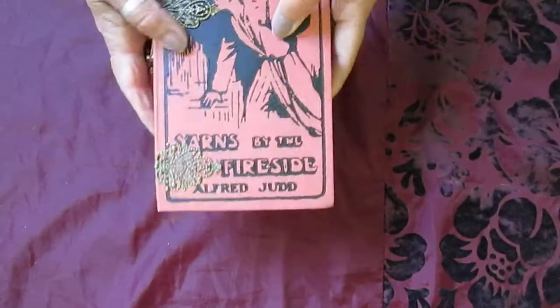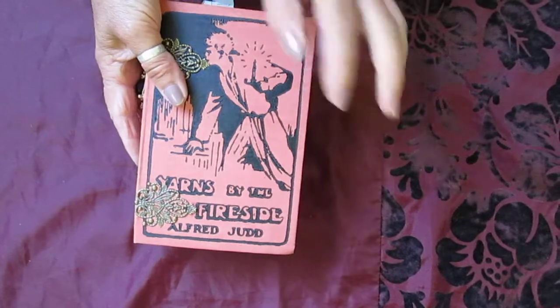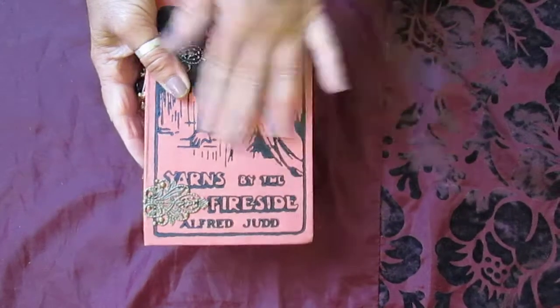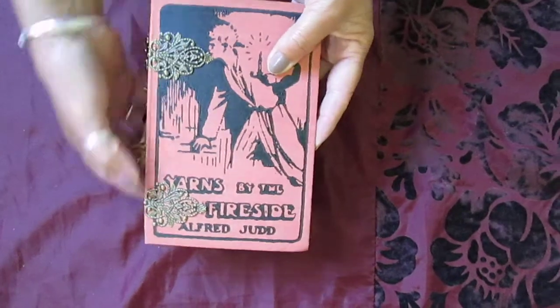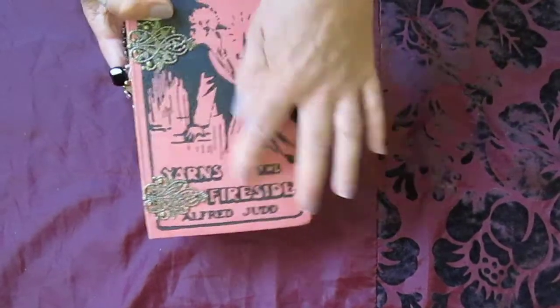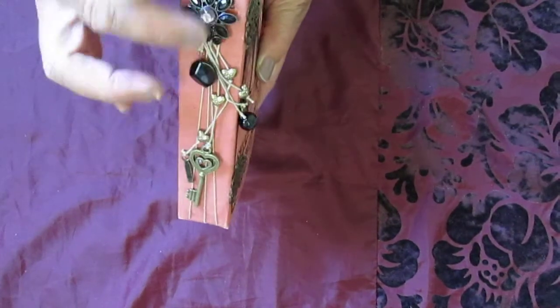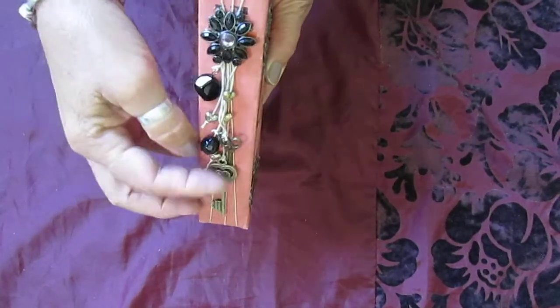So I've got a new journal here that I've made and I've kept the cover very simple. Just put these couple of embellishments on there. I just felt it was a shame to cover up such a nice old cover. A bit of bling there and some danglies.